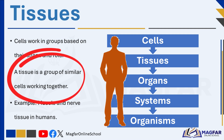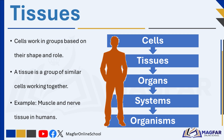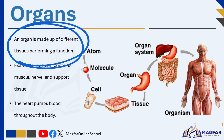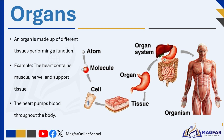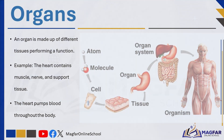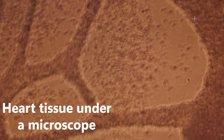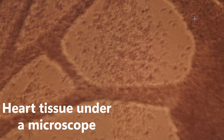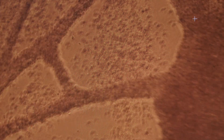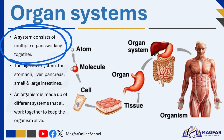A group of cells that perform the same function forms a tissue. For example, in humans, muscle tissue and nerve tissue each perform specific roles. A group of tissues makes up an organ — a structure made up of different types of tissues working together to perform a particular function. The human heart, for example, consists of muscle, nerve, and support tissue, all of which work together to pump blood throughout the body. When different organs work together, they form a system, also known as an organ system. Each system is responsible for a specific function necessary for survival.